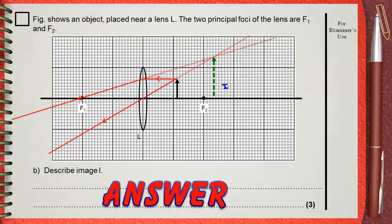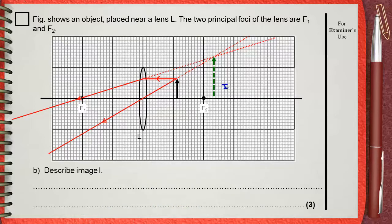The image formed in this case is always virtual because it's formed from extensions. It is erect and it's further from the lens. And as you can see, it is magnified.